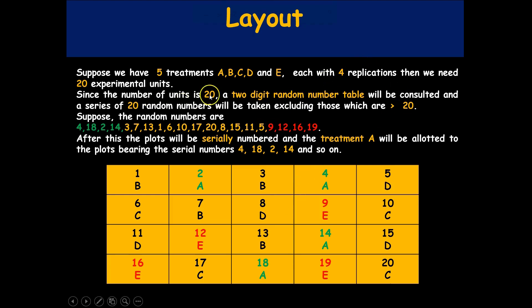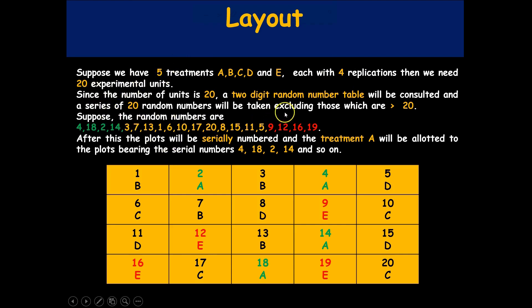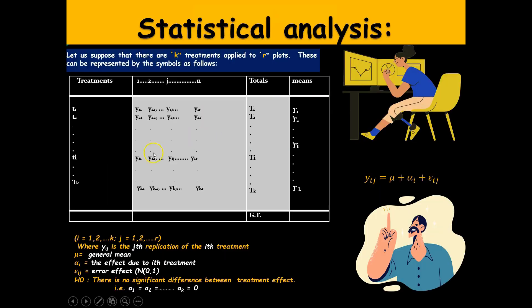The procedure depends on the number of treatments and replicates. Since CRD is a flexible design, a large number of treatments can be used, though we must be cautious given constraints of time and resources. With five treatments replicated four times, we need 20 plots, requiring a two-digit random number table. According to the generated random numbers, we assign treatments randomly so there is no human or subjective bias.